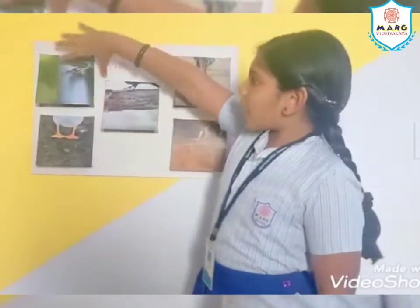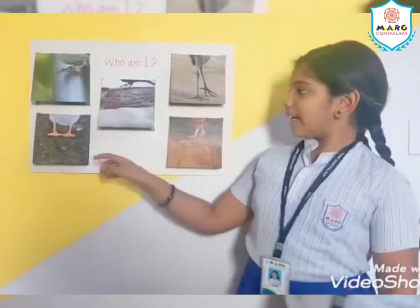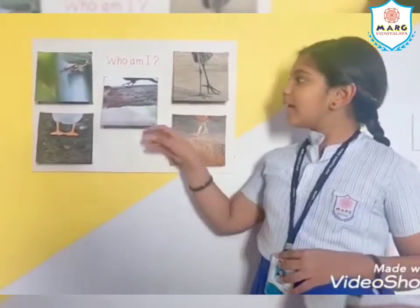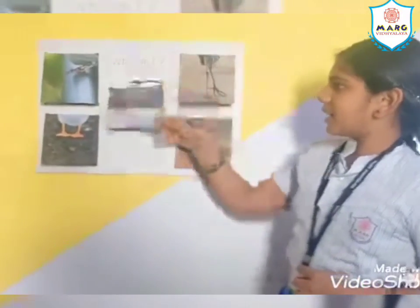It's a sparrow! Yes, it's a sparrow. Next clue: it has webbed feet and it can swim. Can you name the bird? I think it's a duck. Yes, it's a duck! Next: it can climb trees; it has two toes pointing upwards and two toes pointing downwards. Can you name the bird? I don't know. It's a woodpecker!